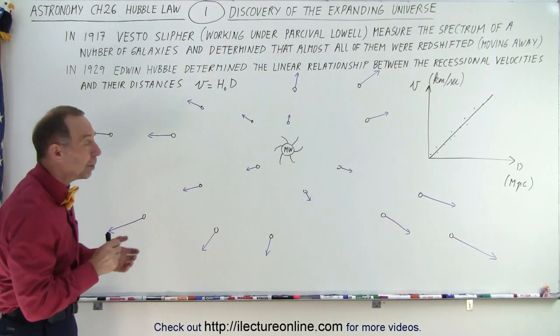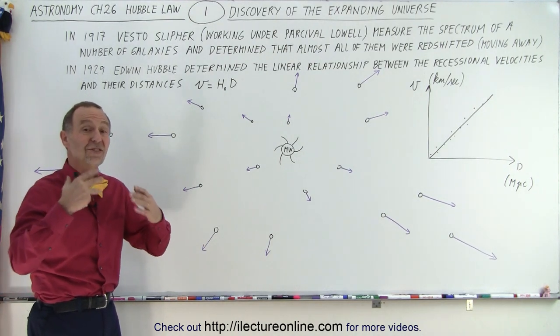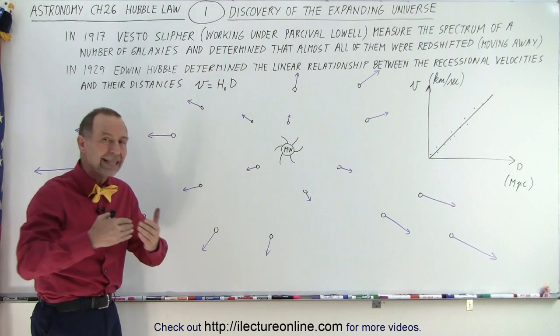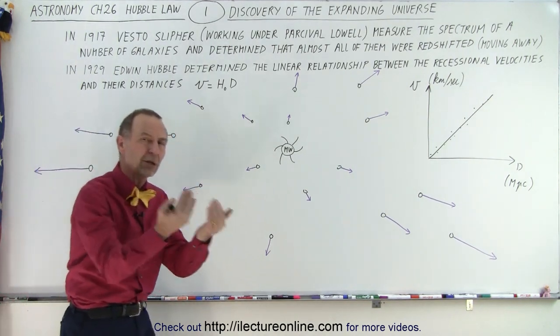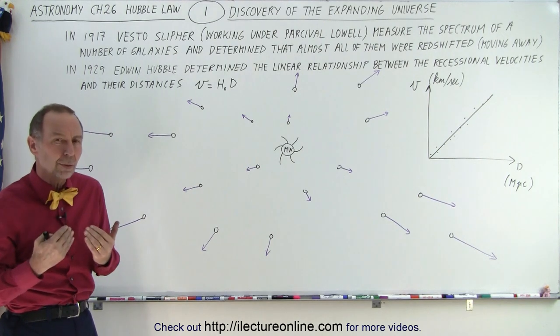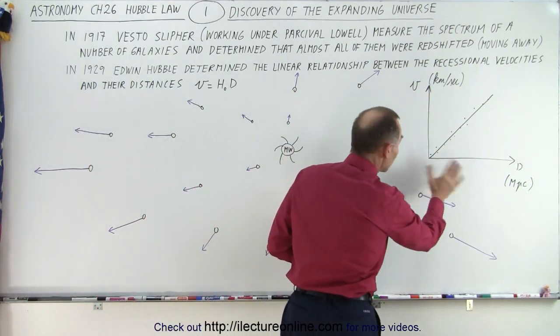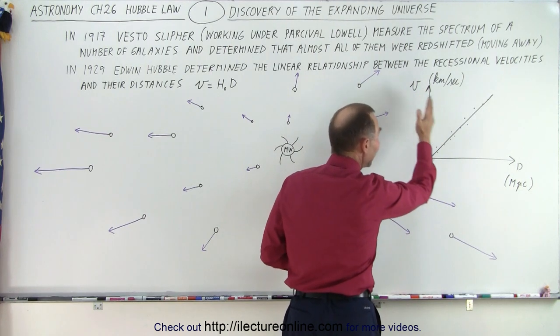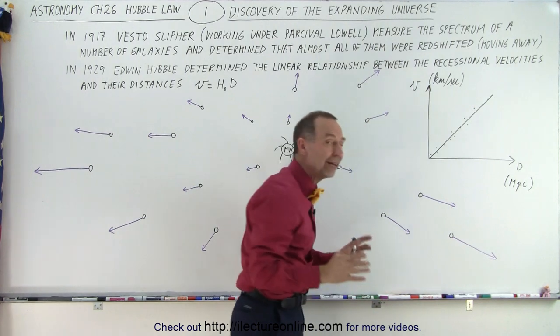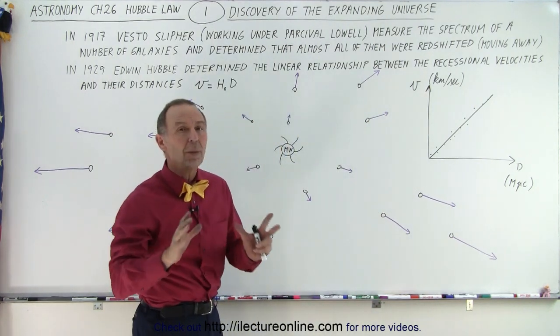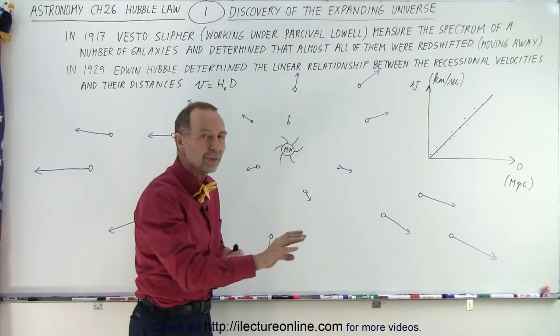Then in 1929, Edwin Hubble found a relationship between the speed at which these galaxies were moving away from us and the distance. He realized the farther they were, the faster they were moving. The closer they were, the slower they were moving. That concept, that linear relationship between velocity and distance, and you can see here that he plotted on this graph, that relationship is now known as Hubble's Law. The farther the galaxy is, the faster it's moving away from us.